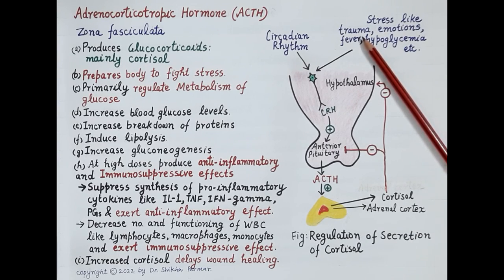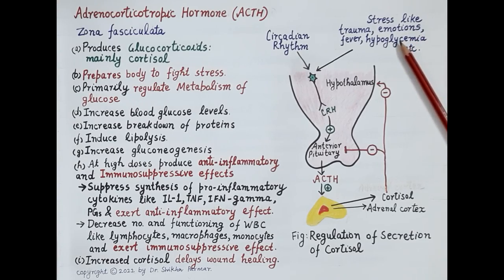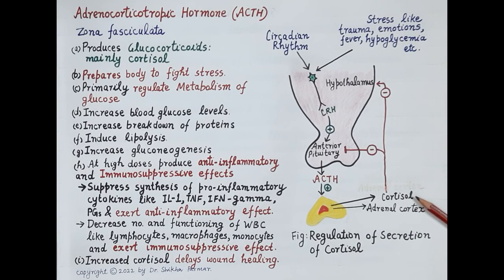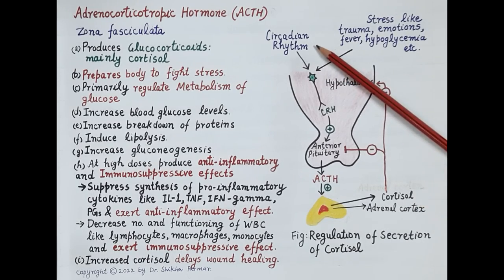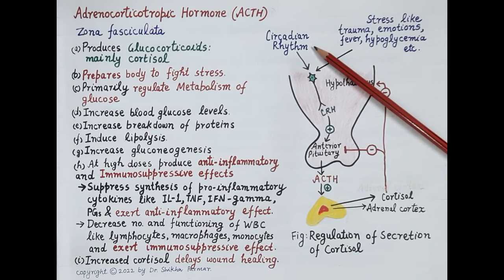Other stress conditions include emotional stress, fever, and hypoglycemia. During all these conditions, the secretion of glucocorticoids — that is, cortisol — increases. Normally, physiologically, it is the circadian rhythm, the sleep-wake cycle, that regulates the secretion of cortisol, but during stress the secretion of cortisol increases.